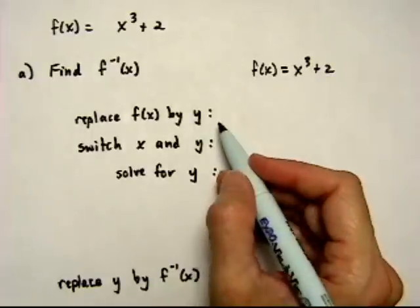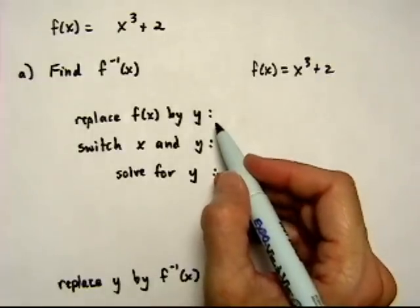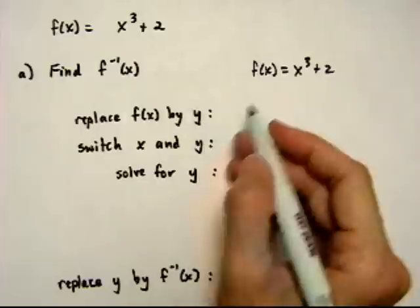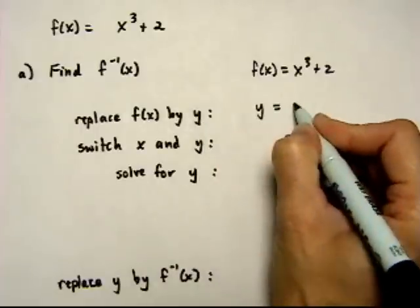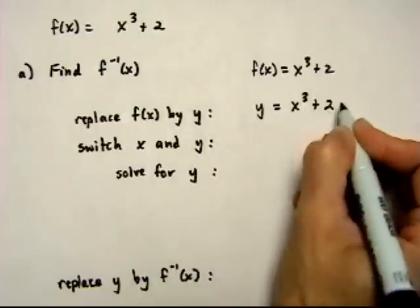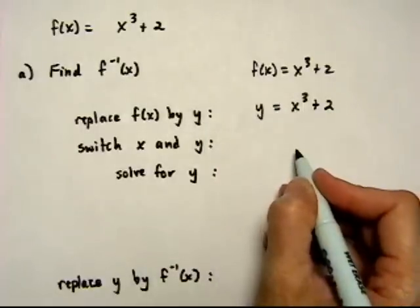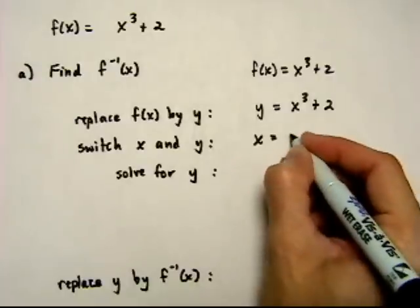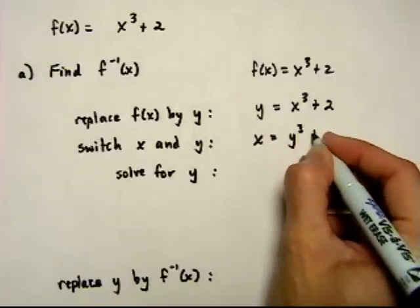We're going to follow the usual steps from the previous videos. We're going to replace f of x by y, so y is equal to x cubed plus 2, then switch x and y: x equals y cubed plus 2.